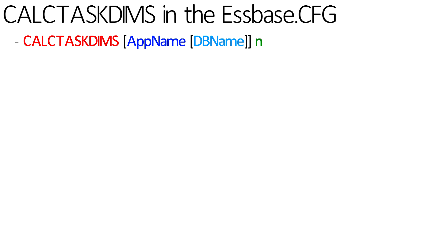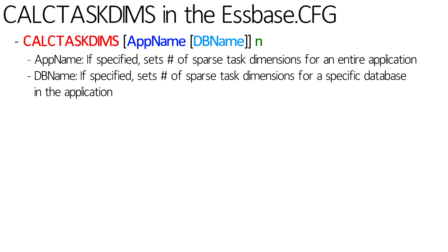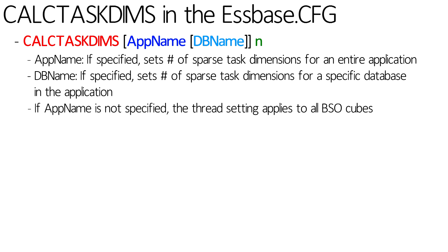Or if you want, you can specify an application name, and if you specify an application name, you can specify a database name in that application. You could theoretically have more than one line of CalcTaskDims so that you could change it by database. CalcTaskDims only affects block storage cubes because it only counts sparse dimensions, and there is no concept of sparsity in an ASO cube.